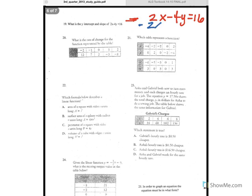So you want to get y by itself, so you're going to subtract the x on both sides. Then you're going to divide by negative 4.